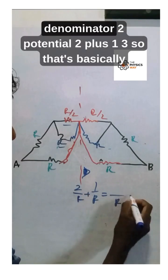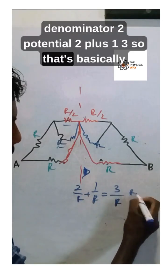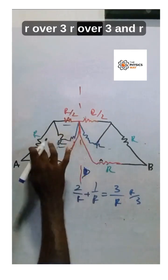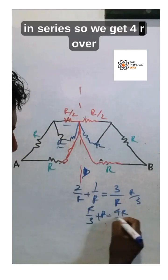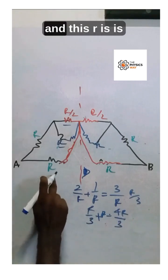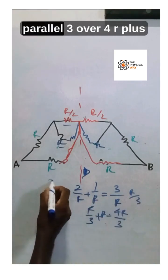So we get 4R over 3. This 4R over 3 and this R are in parallel: 3 over 4R plus 1 over R. With 4R as common denominator, 3 plus 4 equals 7.